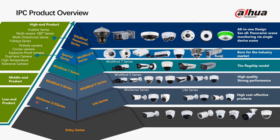Alongside the entry series we have the WiSense 2 and WiSense 3 and the Light series products. These are highly cost-effective products, easy to get in the market at affordable prices. Moving upwards, we have the mid-end products — the WizMind 4 and WizMind 5 series — which are high-quality, strong-performing cameras offering more advantages over the WiSense 2 and 3.